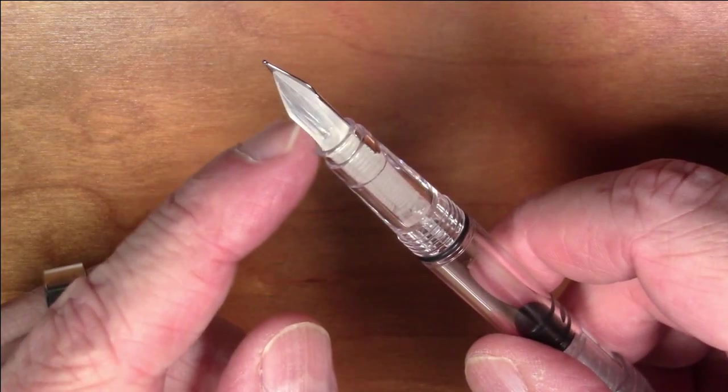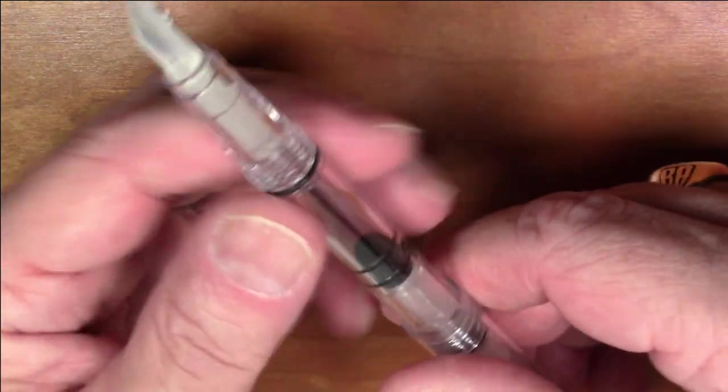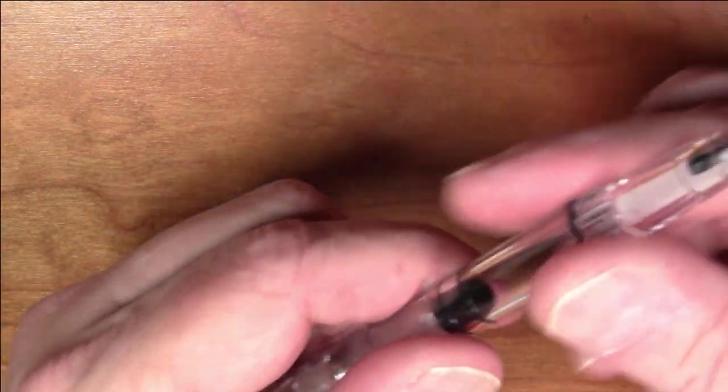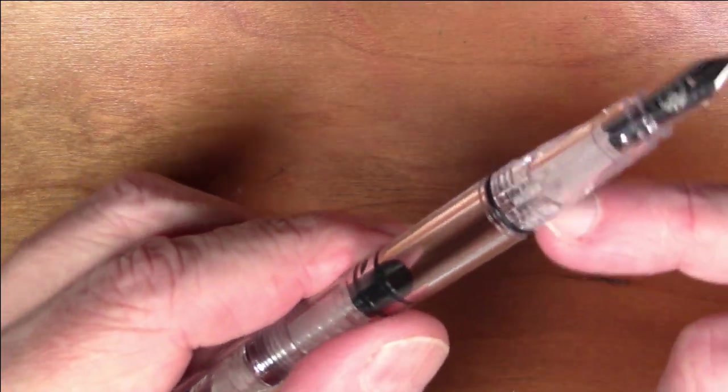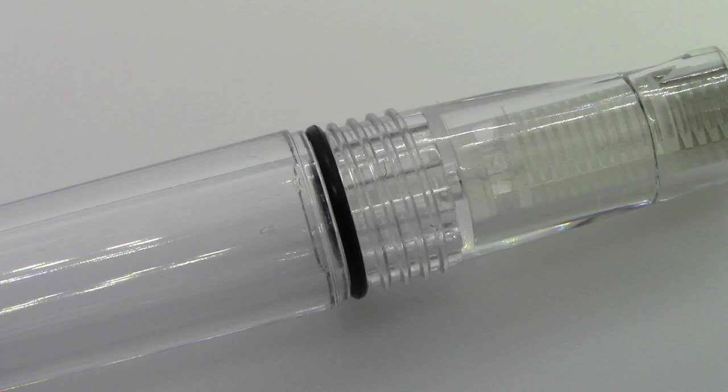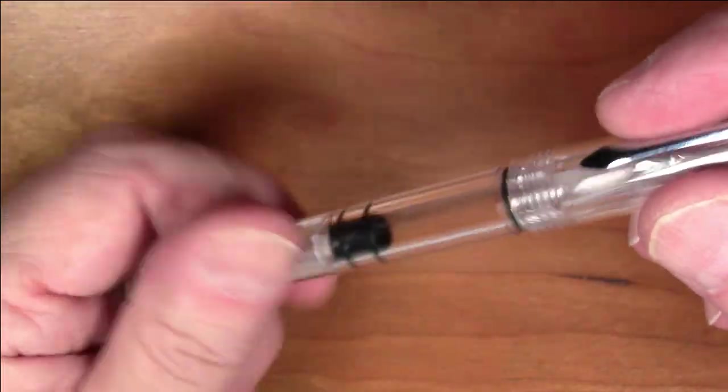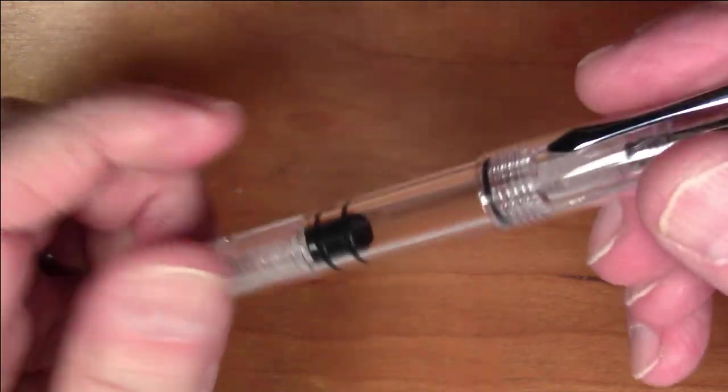The barrel and the section are one piece, so this o-ring here is not to seal the barrel and the section, it is to seal the cap, which is interesting.